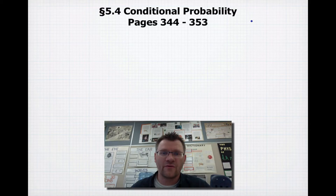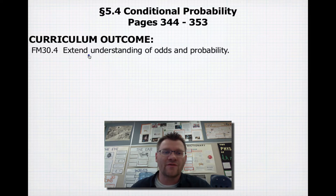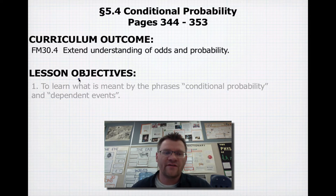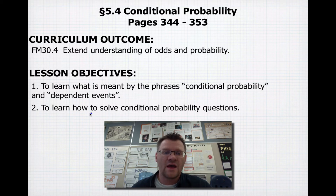Today's lesson is 5.4, Conditional Probability, on pages 344 to 353. Our curriculum outcome is to extend understanding of odds and probability. Our lesson objectives are to learn what is meant by the phrases conditional probability and dependent events, and to learn how to solve conditional probability questions.